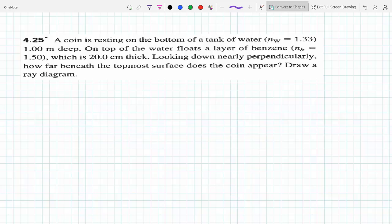That benzene layer is 20 centimeters thick. Looking down nearly perpendicularly, meaning the incident angle is almost zero, very close to zero, meaning perpendicular to the interface, how far beneath the topmost surface does the coin appear? A ray diagram would help on this problem.